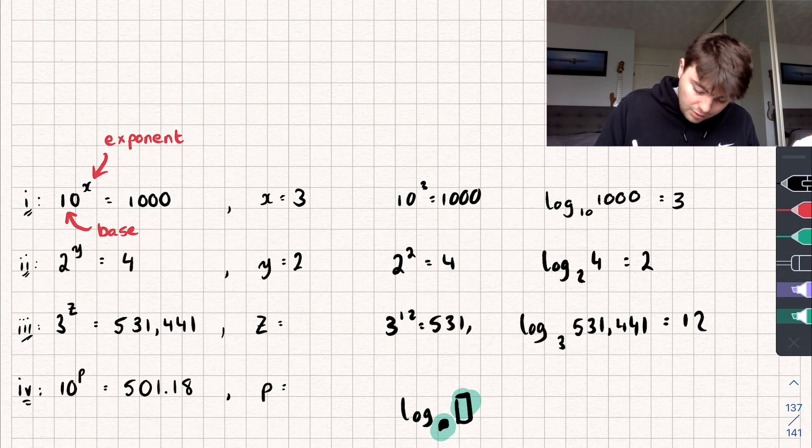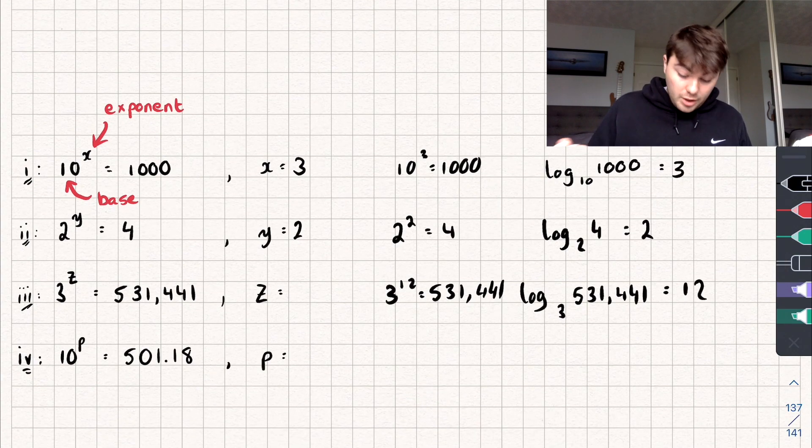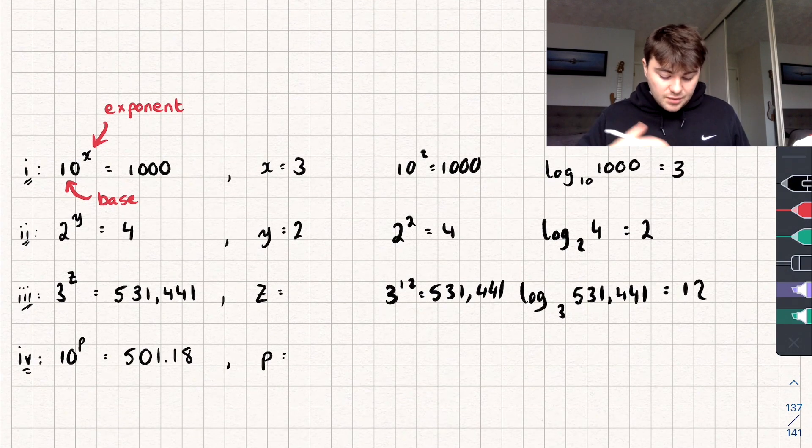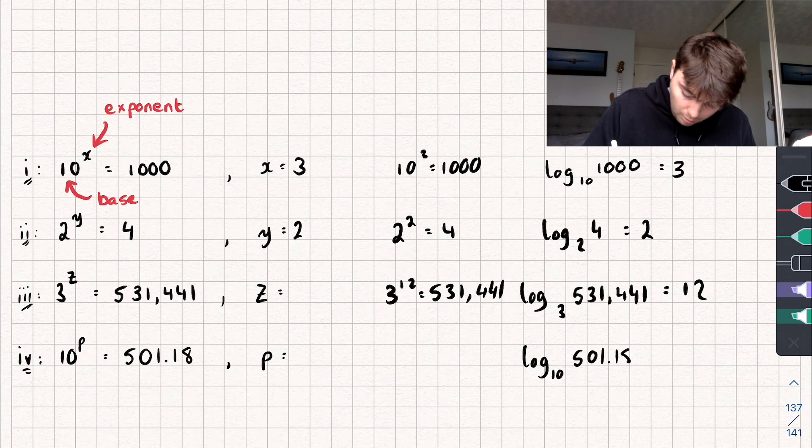Let's now answer this fourth question. We've got 10 to the power of p is 501.18. If I wrote that out, I would say the log base 10 of 501.18, well what's that equal to?